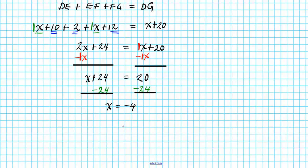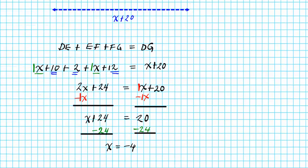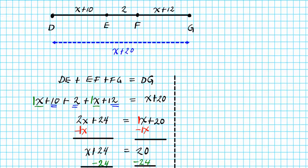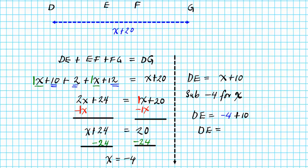Is x equals negative 4 our final result? No — we were asked to find DE, not x. DE is x plus 10, so we substitute negative 4 for x: DE equals negative 4 plus 10. Keeping the sign of the bigger number, that gives us positive 6. That is the final answer for question number 4: DE equals 6 units.